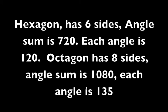Hexagon has six sides. Angles add up to 720 degrees. Octagon has eight sides. Angles equal 1080 degrees.